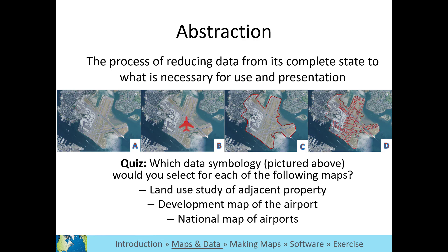Which data symbology would you select if you wanted to create a map of potential new development within the airport? D. Because it shows the airport layout, it would be important to know where the runways are when planning future development.